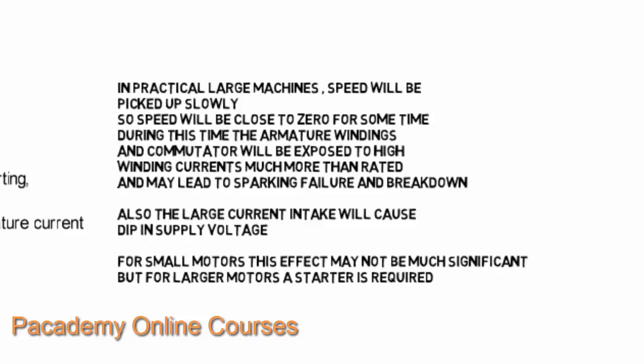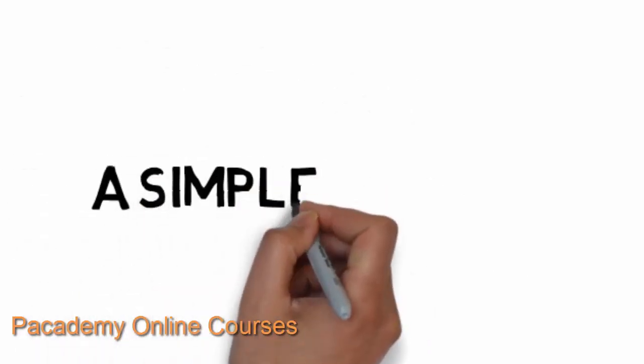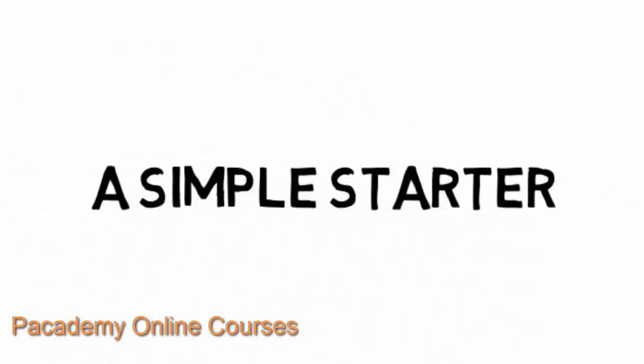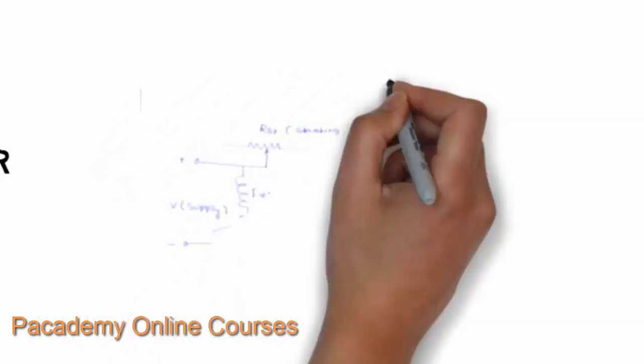The large current intake will also cause a dip in the supply voltage, which may affect the operation of nearby equipment. For small motors the effect of starting may not be significant and may not require any additional equipment, but for large machines it is necessary to reduce the armature current at the instant of starting. This is done by using starters known as DC motor starters. We will now look into the principle of a simple starter.